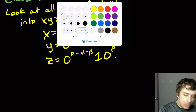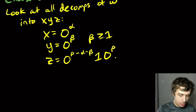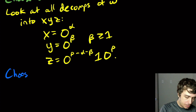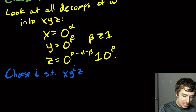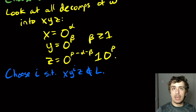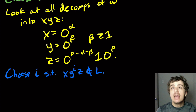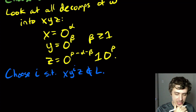Z is the rest of the string: we have P minus α minus beta zeros remaining, then the 1 separator, then all the zeros at the end — 0^P. Now we need to choose an i such that XY^iZ is not in the language. The pumping lemma says it must always be in L for every i, so if we find one value of i where it is not in L, that contradicts our assumption that L is regular.